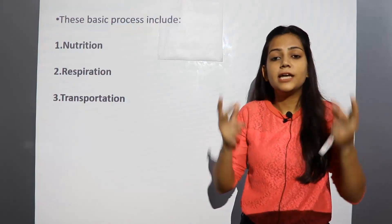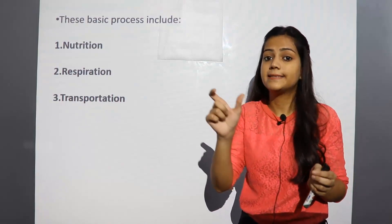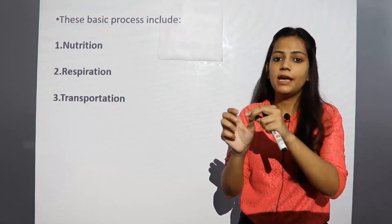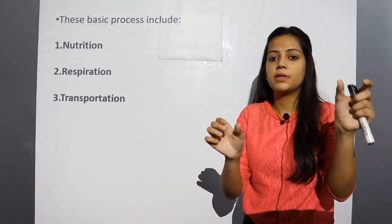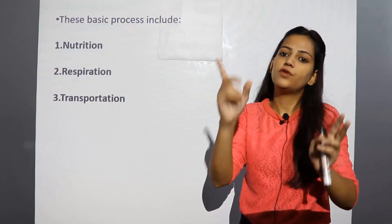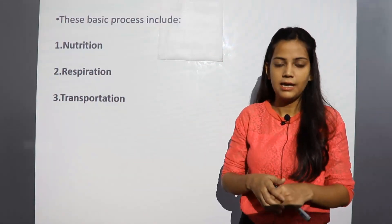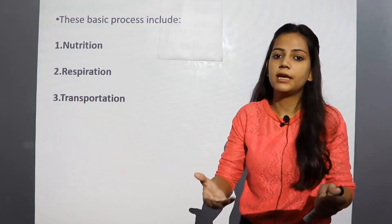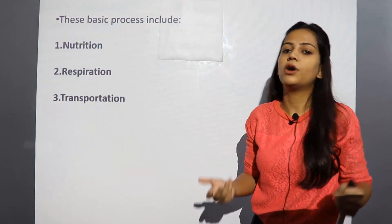Oxygen that enters your body gets transported to each of the cells. The cells use this oxygen along with the food you eat to generate energy. That energy is then used to perform all functions and activities in your body. Every cell is functional and every cell works — you can work individually because the body is made by cells.